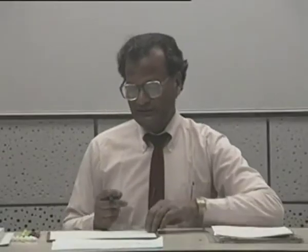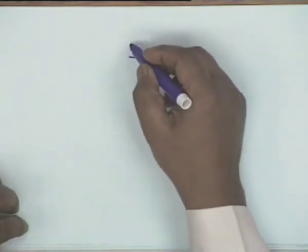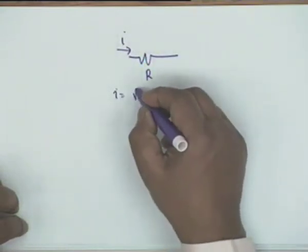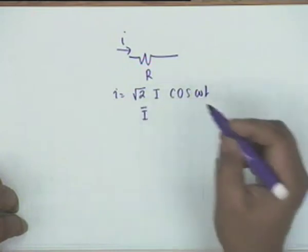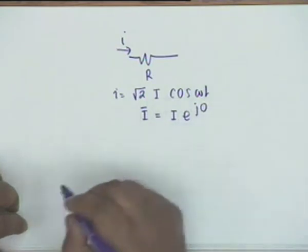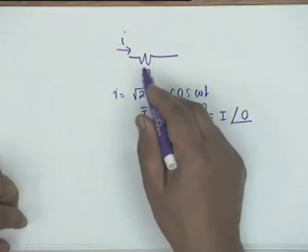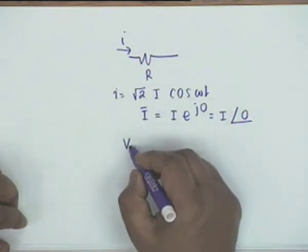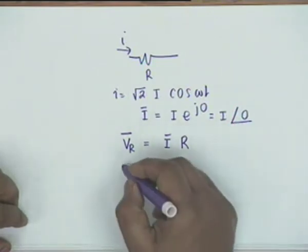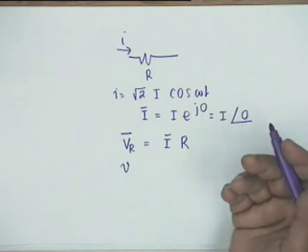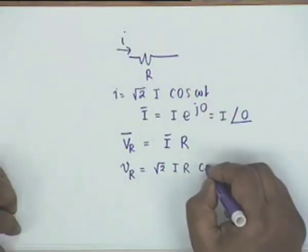Let us consider the three basic elements: a resistance, an inductance, and a capacitance. For a resistance, suppose we excite it by a current i equal to root 2 I cosine of omega t; the corresponding phasor is I-bar equal to I e to the power j0, or I angle 0. If this passes through a resistance R, the corresponding voltage phasor V_R shall be simply I times R. The actual voltage shall be equal to root 2 IR cosine of omega t.